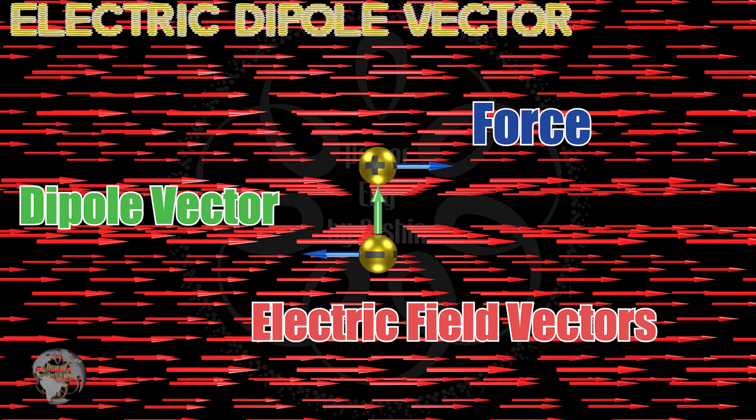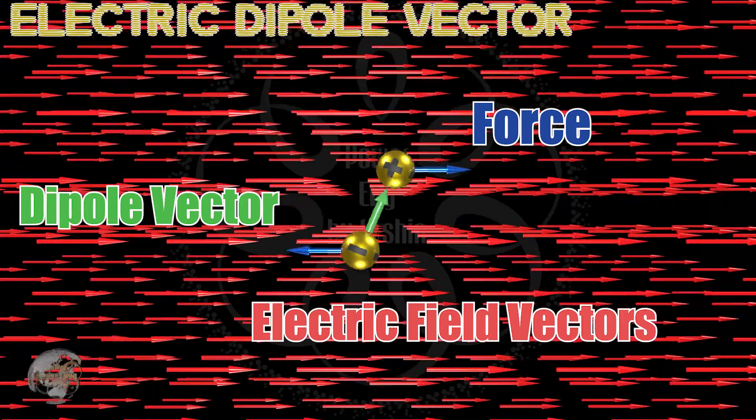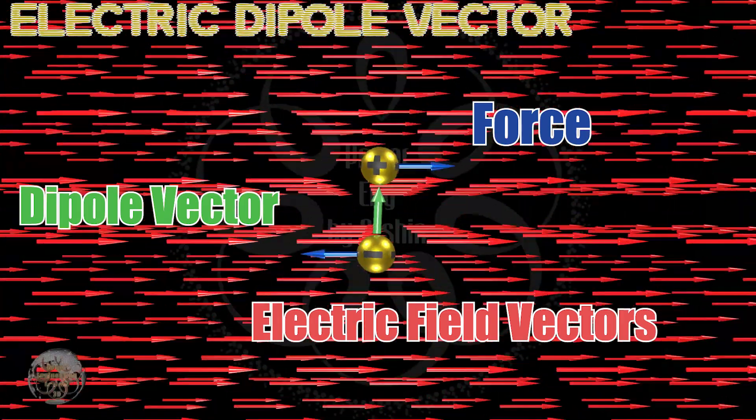As a result, a torque is applied to the dipole, causing it to rotate. This rotation will continue until the dipole vector aligns with the direction of the field lines.